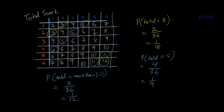There can also be a question like: find the probability that the total is a prime number. Out of 36 numbers, the prime values are: 2, 3, 3, 5, 5, 5, 5, 7, 7, 7, 7, 7, 7, 11, 11. Counting them: there are 15 prime numbers out of 36. So the probability is 15/36.